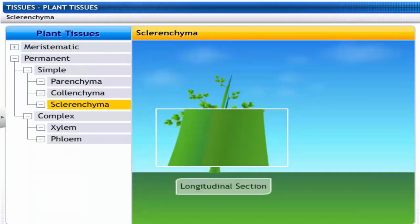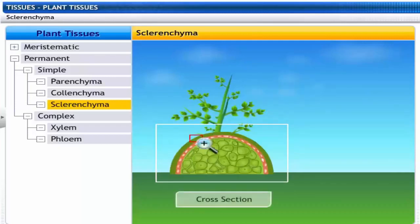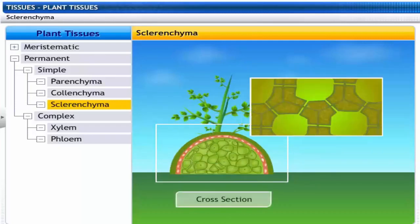These are sclerenchyma cells, the third type of simple permanent tissues. These are long, narrow cells with no intercellular spaces. Sclerenchyma is a dead cell with deposition of lignin in the cell wall.